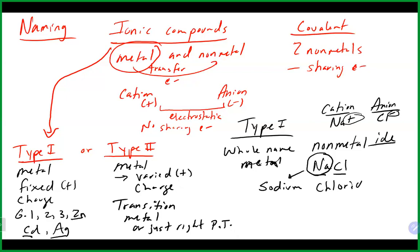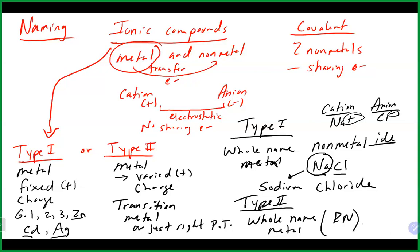For Type 2, we do the same thing except because the metal can have a variable charge, we use the whole name of the metal, add Roman numerals to indicate the charge on the metal, and then the non-metal gets the 'ide' treatment. You have to figure out what the charge is on the metal. A reminder: the Roman numeral indicates the positive charge on one metal ion — not how many metals you have, which is a very common mistake.